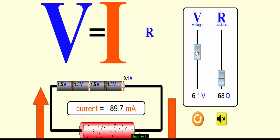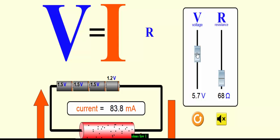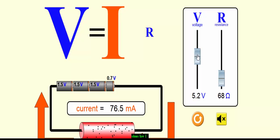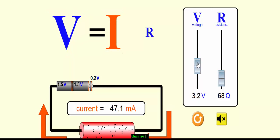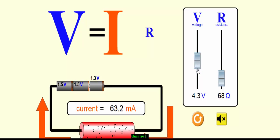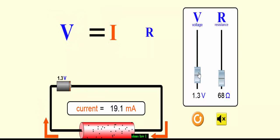When the applied voltage is increased, the current flowing through the resistor will increase, provided the R value is constant. This is our first statement from Ohm's Law. The next thing is, in Ohm's Law, I and R are inversely proportional.